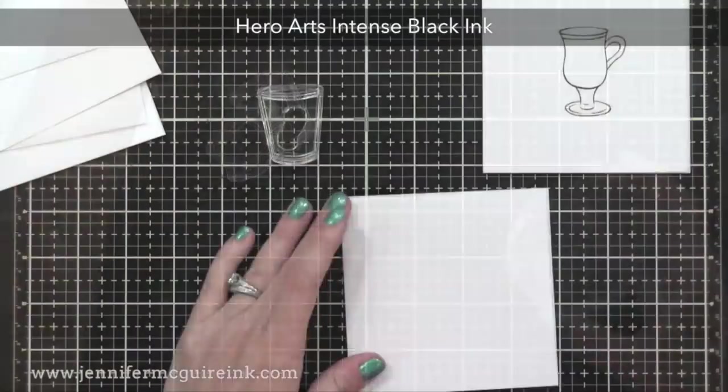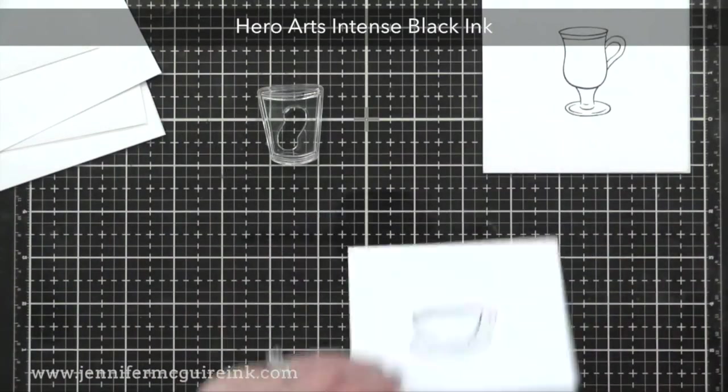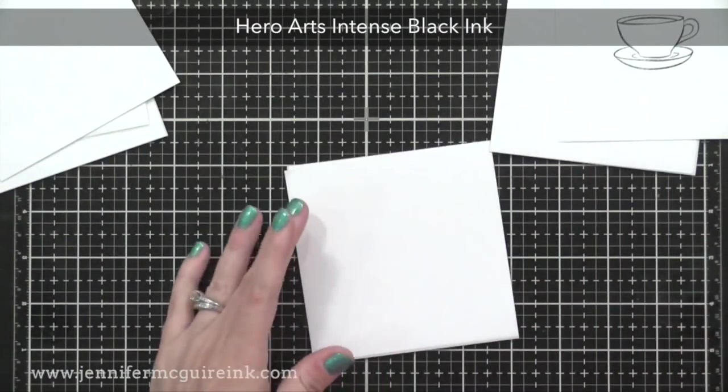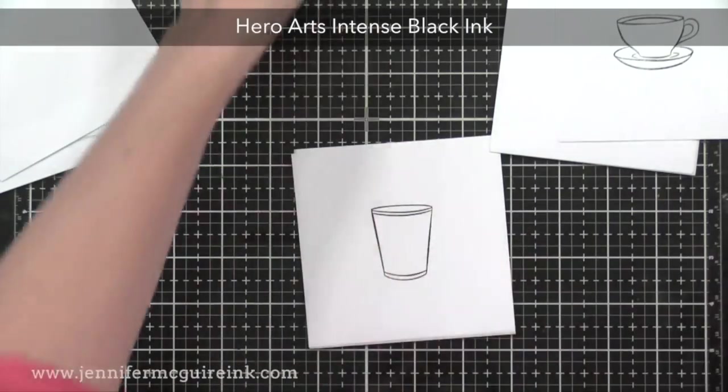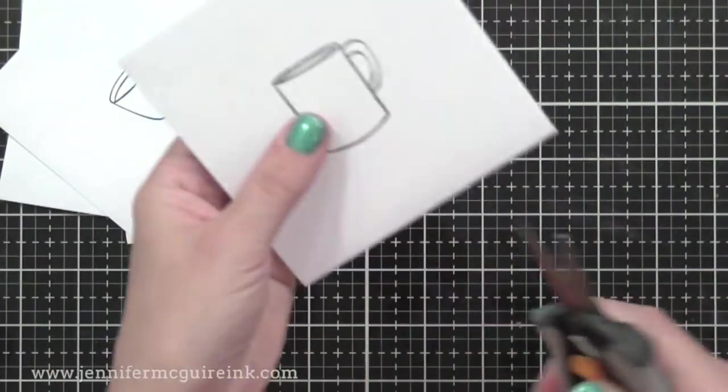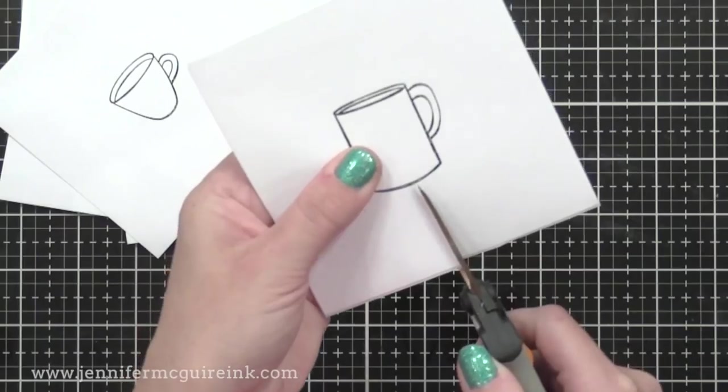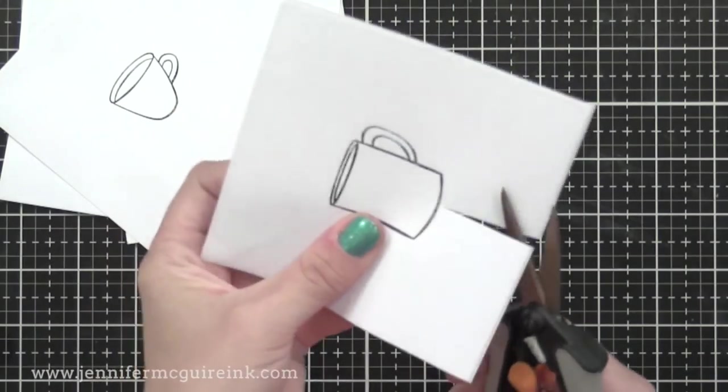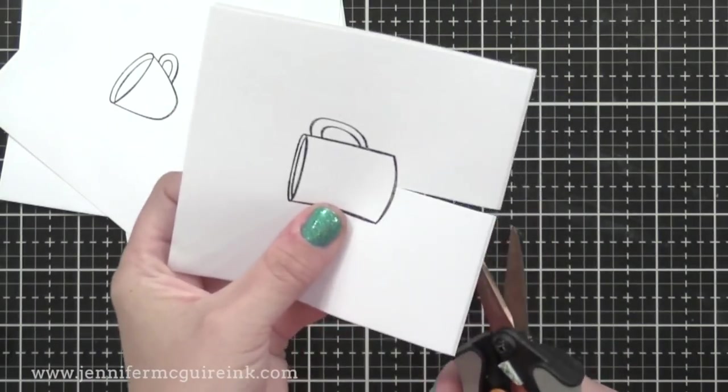Okay, so now I'm going to stamp my different mugs right in the center of my mask with Hero Arts Intense Black Ink. You could use any ink for this. Next, I will cut these out. I'm going to cut right up to the stamp line so that it's a perfect mask with no trim.